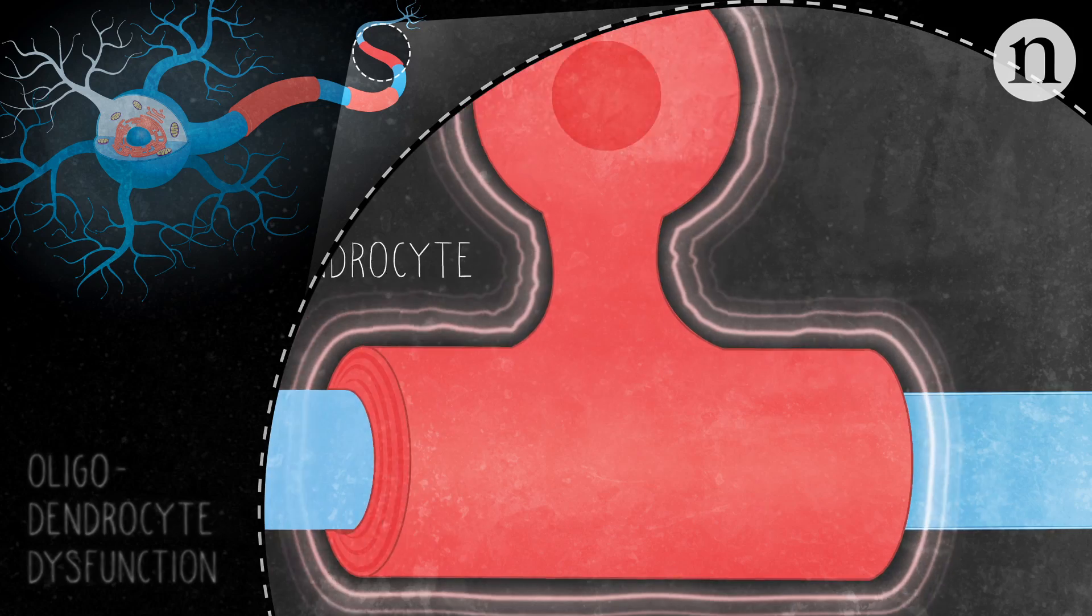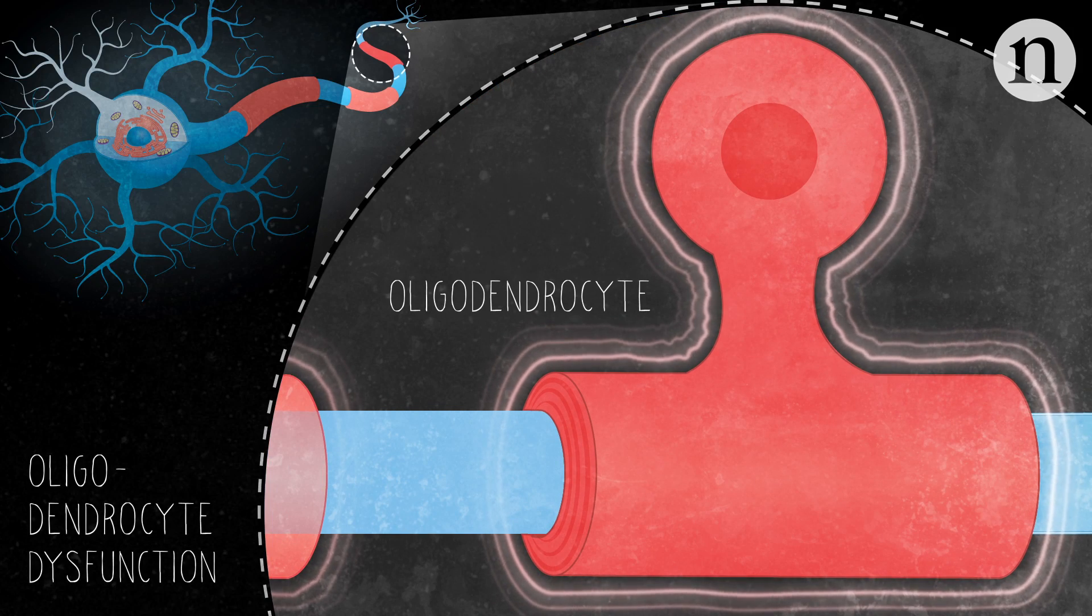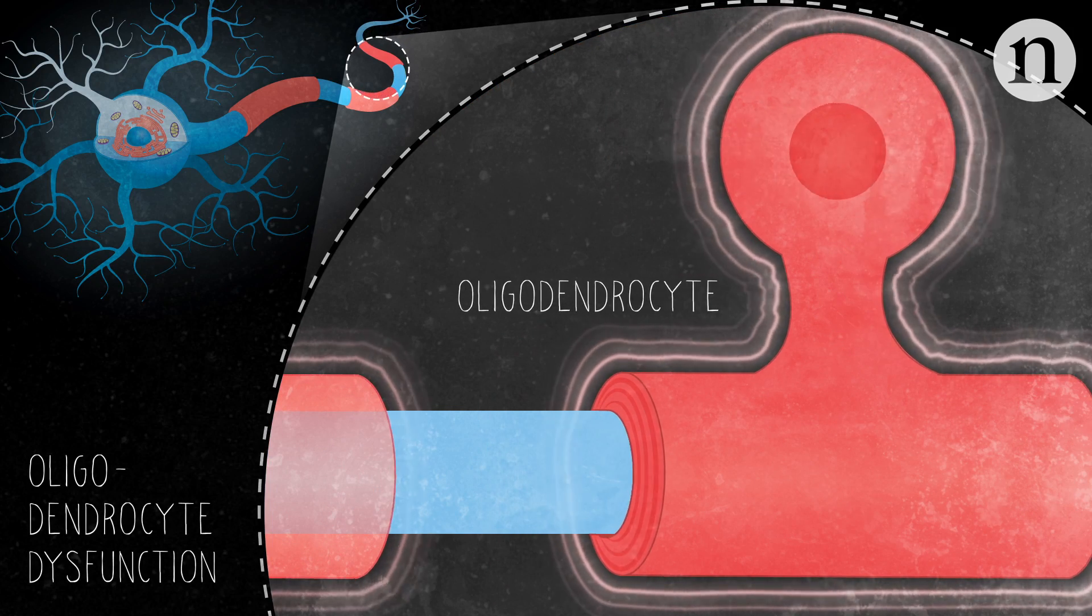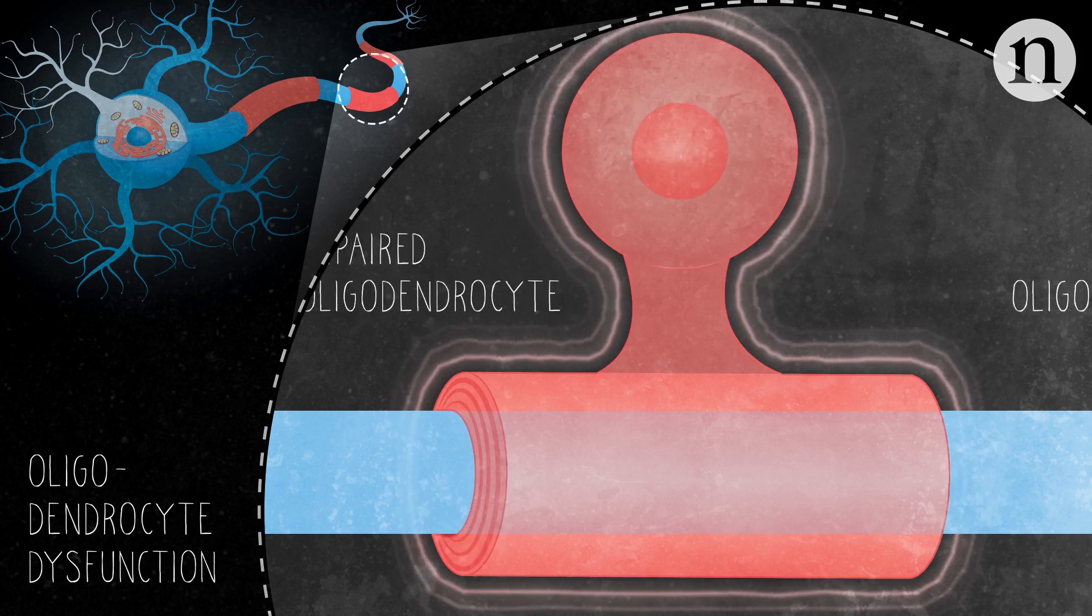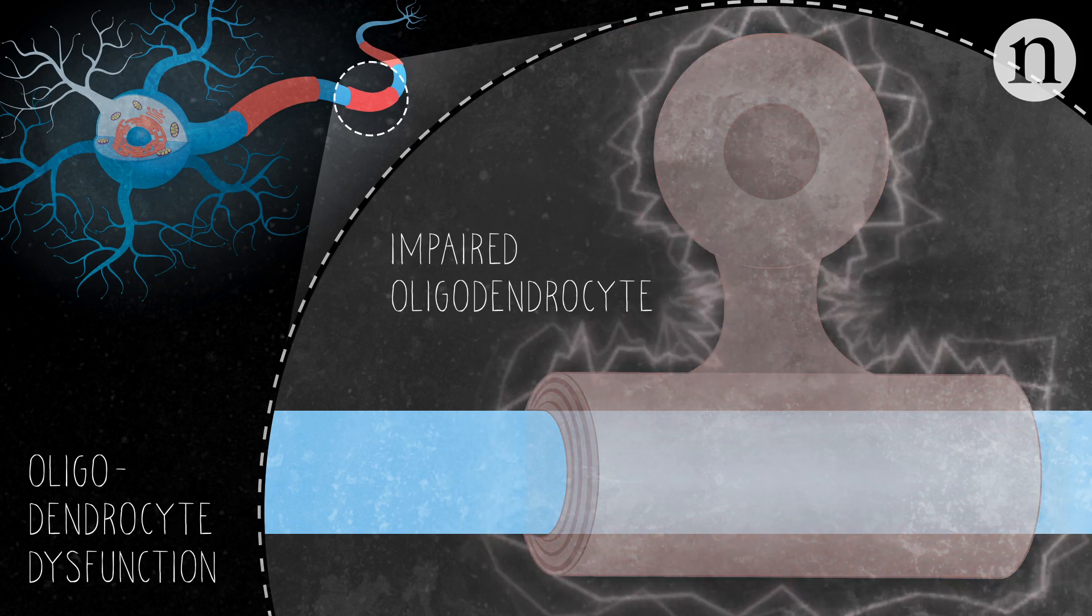Other cell types can also be involved in ALS. Oligodendrocytes, which electrically insulate the axon and provide support to the motor neuron, don't work in people with ALS.